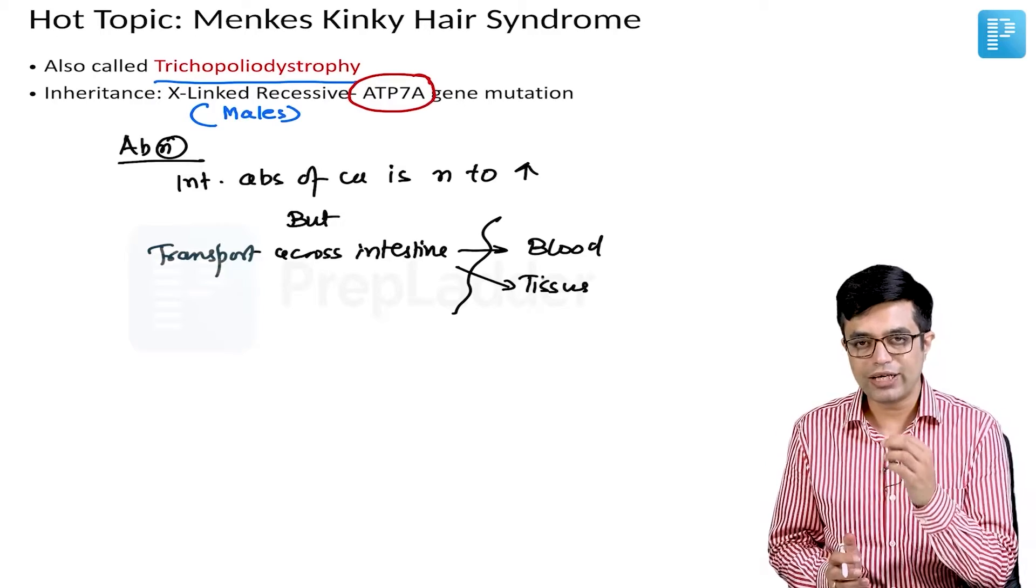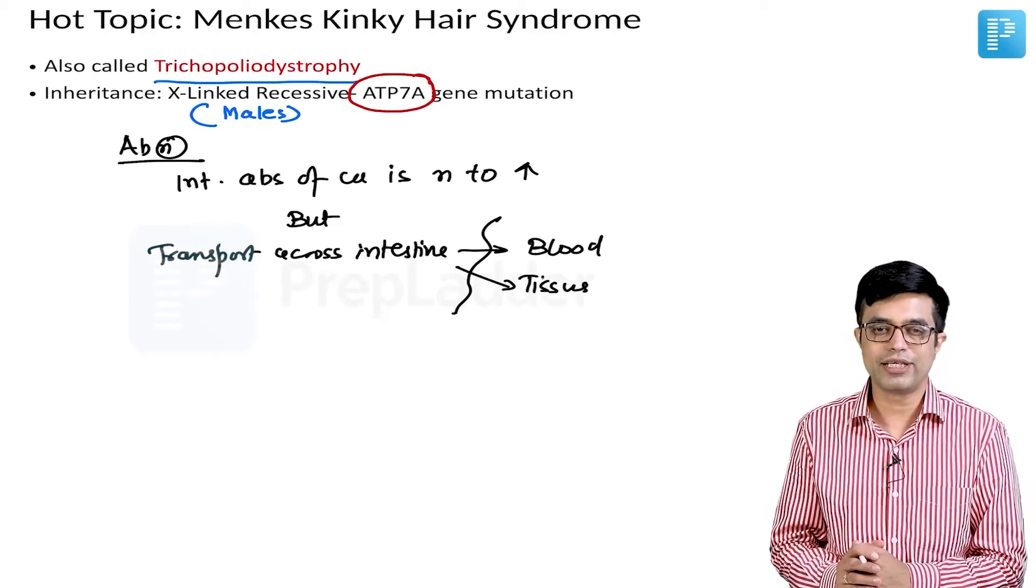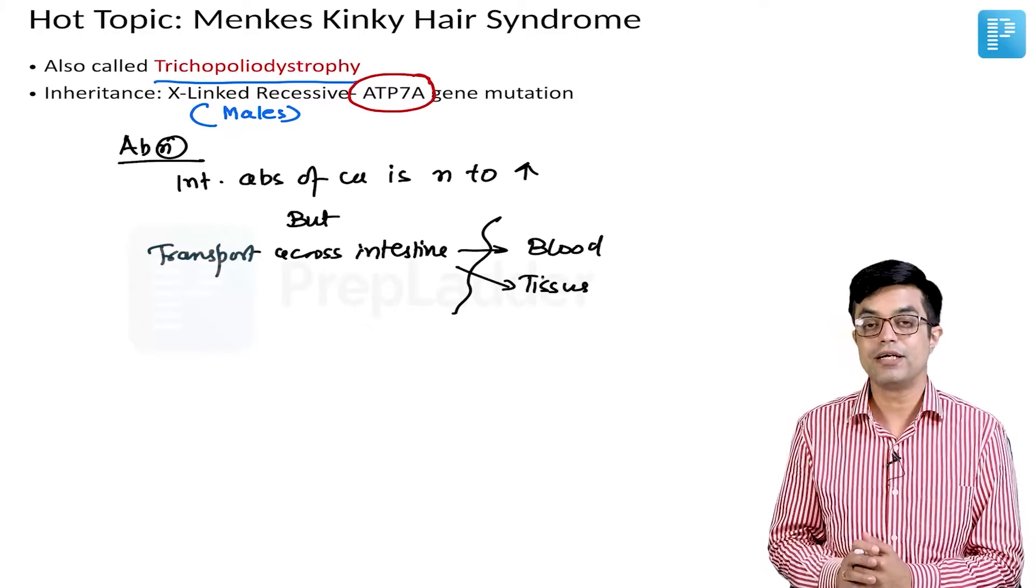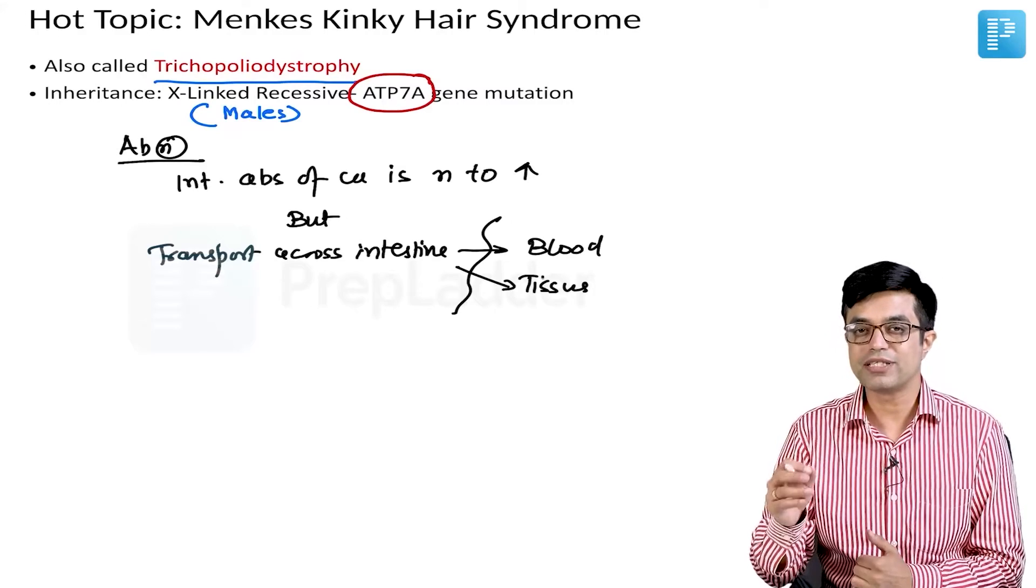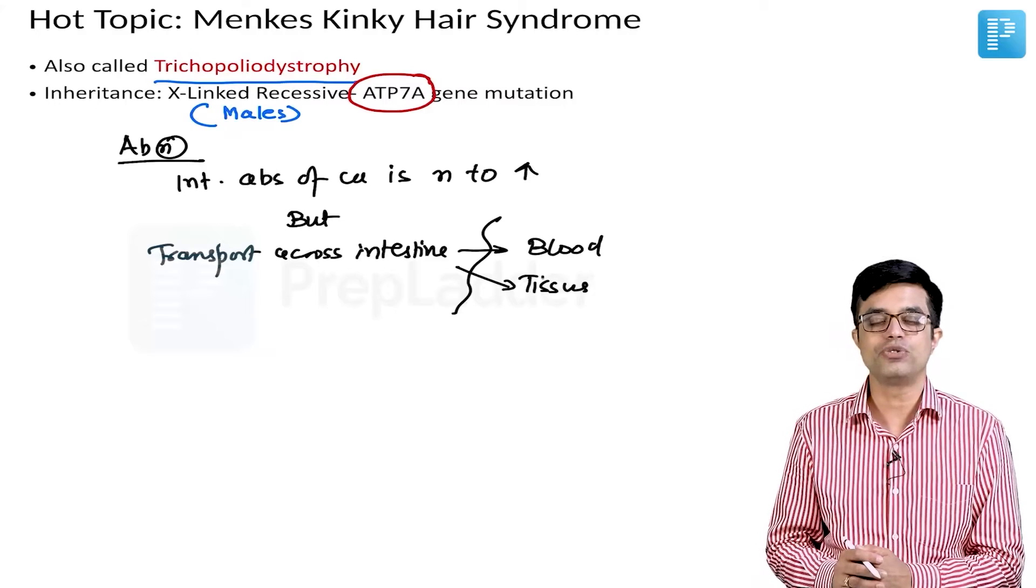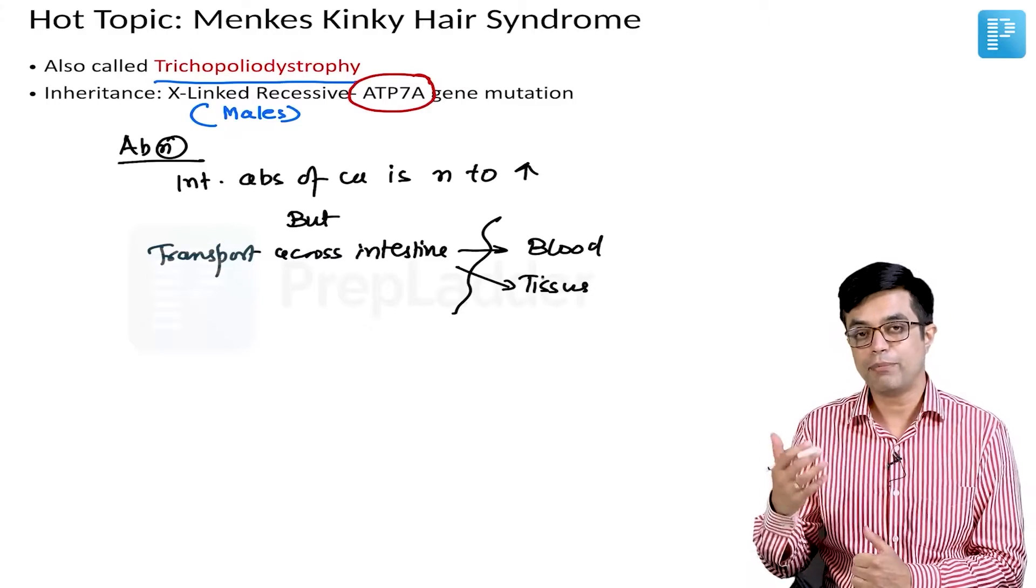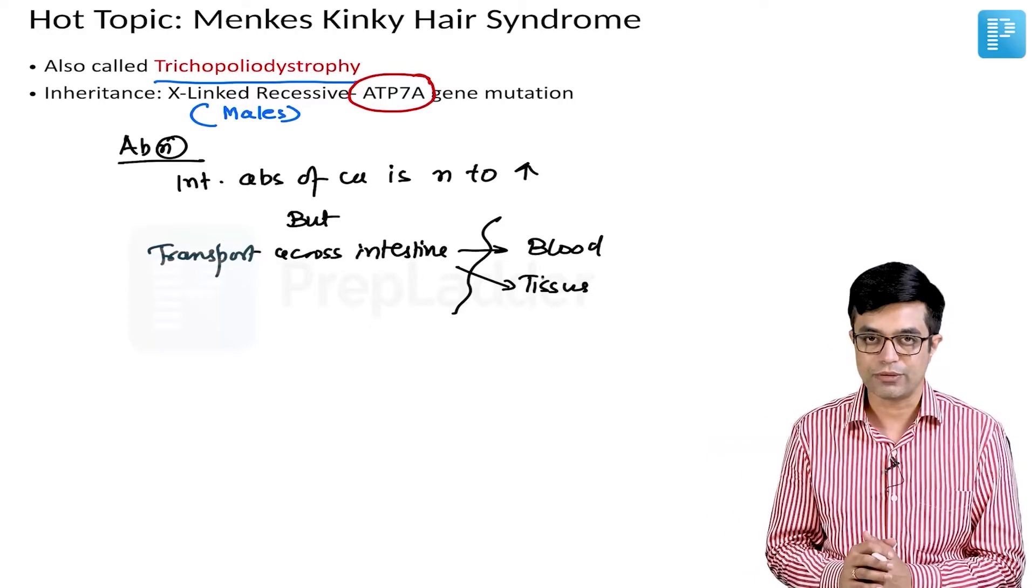There will be severely low levels of copper in the body, low ceruloplasmin levels despite the absorption being more than adequate. That is why oral copper supplementation is not of much use in these patients; you need to give parenteral copper supplementation as we shall see.